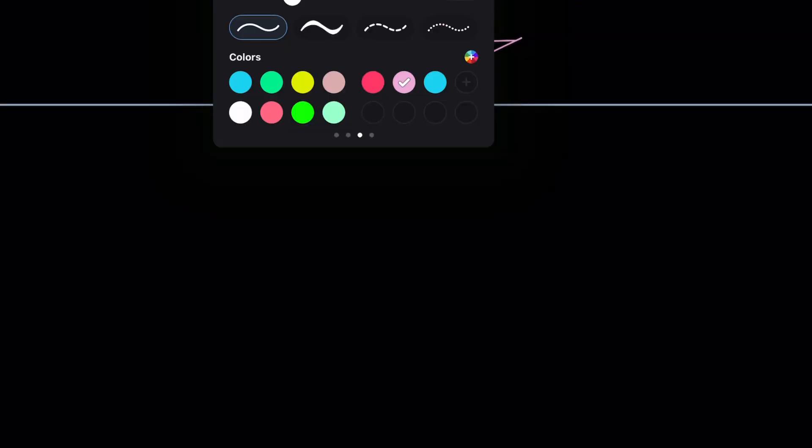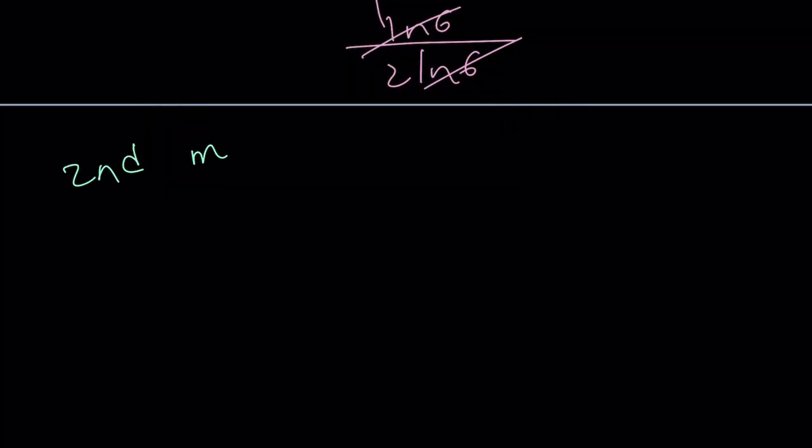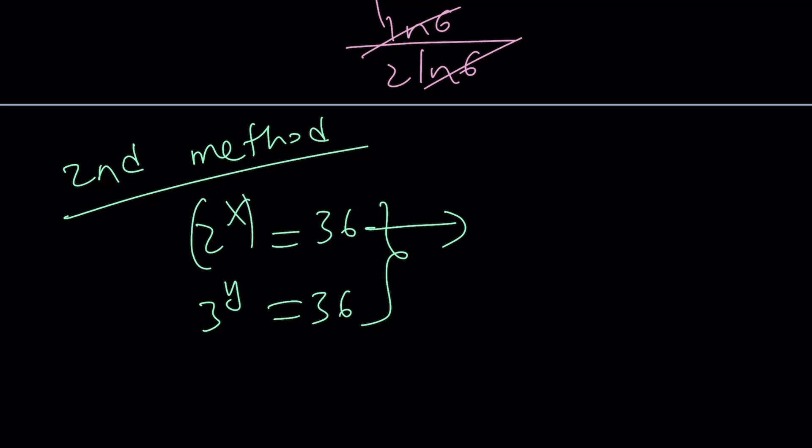Okay, cool. Let's go ahead and talk about the second method real quick because it is real quick. That's why it's the second method. The second method is usually real quick. So what am I looking at? I have 2 to the x equals 36, and 3 to the y is 36. And from here, I get the following. Raise both sides to the power 1 over x. What do you get?